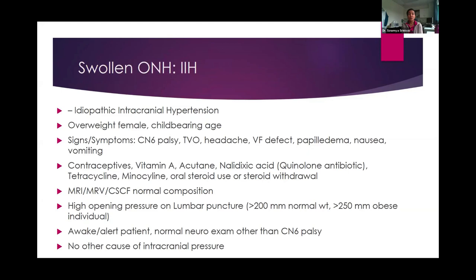When you see a swollen optic nerve, idiopathic intracranial hypertension is a key diagnosis to consider. This is usually an overweight female of childbearing age. Signs and symptoms include CN6 palsy, transient visual obscurations, headaches, visual field defects, papilledema, nausea, and vomiting. Factors that can lead to IIH include contraceptives, vitamin A, accutane, nalidixic acid, tetracycline, minocycline, or oral steroid withdrawal.